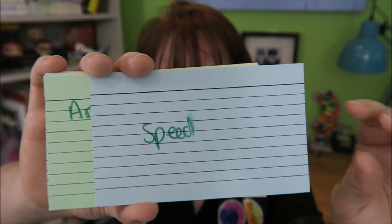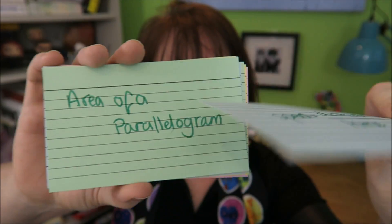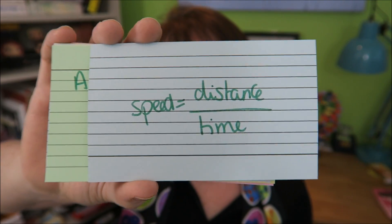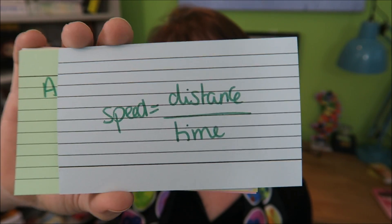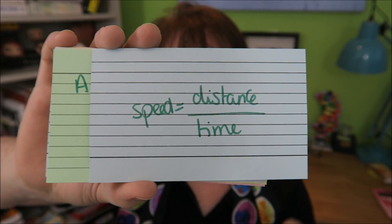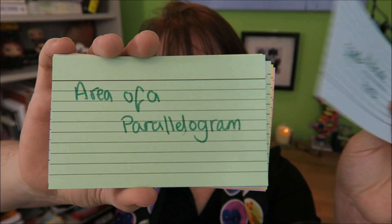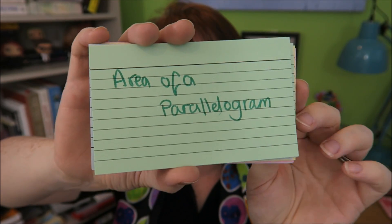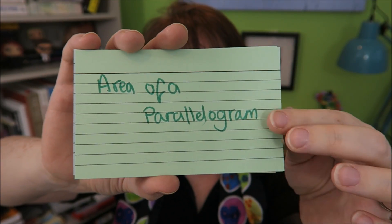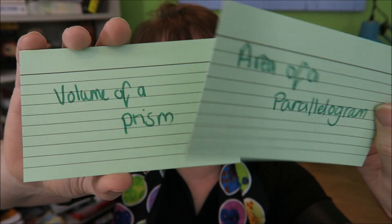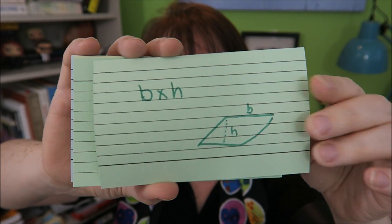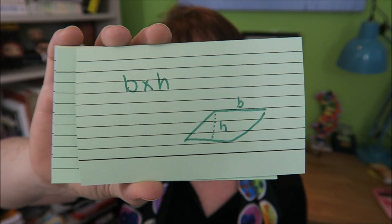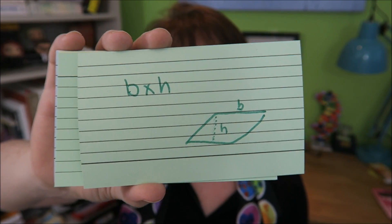Speed equals distance over time — this is a good one, you need it for physics as well. Area of a parallelogram — and that is just base times height. It's just a wonky square.